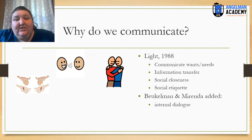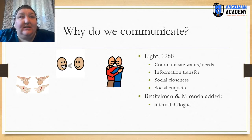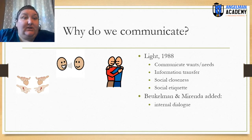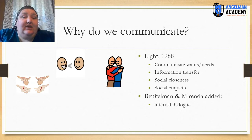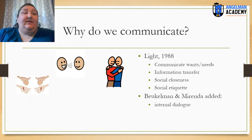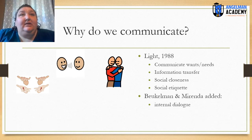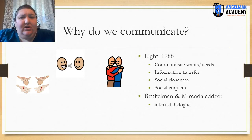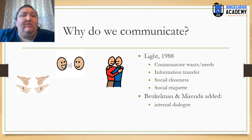Oftentimes, many individuals with Angelman Syndrome excel at finding ways for social closeness. Unfortunately, sometimes what this looks like is a lot of headlocks and hair pulling as bids for social closeness. So one of the things we want to do is teach them to use augmentative and alternative communication to make bids for social closeness instead of using their bodies. The next reason we communicate is social etiquette — things we say because it's polite. Not just please and thank you, but expected exchanges like 'How are you? I'm fine.' Or when somebody's had a loss, saying 'I'm sorry for your loss.' Those pieces of politeness and social etiquette.